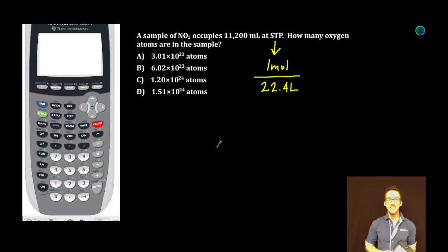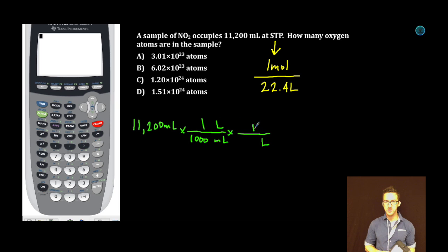Alright, let's do some dimensional analysis. We're starting with 11,200 milliliters. Gonna get rid of that milliliters, convert to liters. One liter, a thousand milliliters. Keeping it going all the way to atoms. Gonna cancel out liters, go to moles. One mole, 22.4 liters. Only at STP is that true.